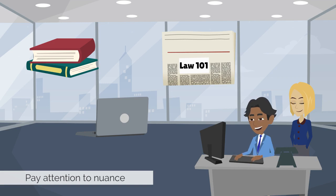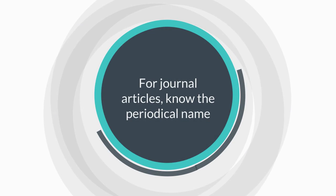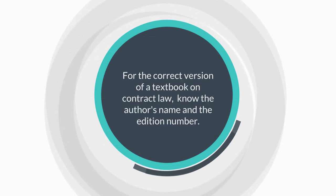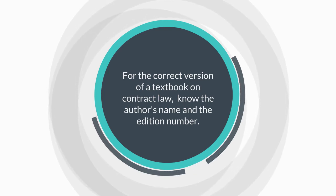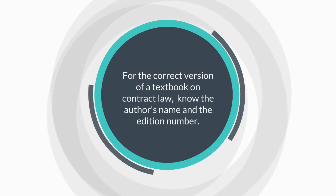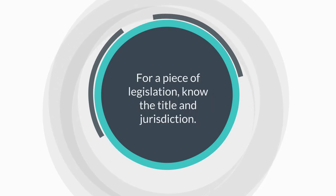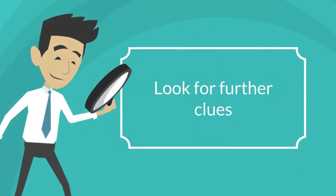Let's go through some more examples. For locating a journal article, you need to know the name of the periodical in which it was published. To find the correct version of a textbook on contract law, you need to know the author's name and the edition number. Also, to locate a piece of legislation, you need, at the very least, the title and jurisdiction. Some citations include information that is not required to locate the source, but is still very helpful.